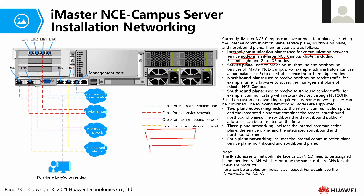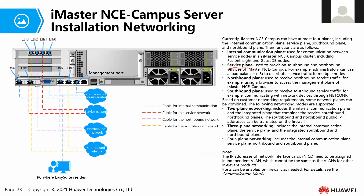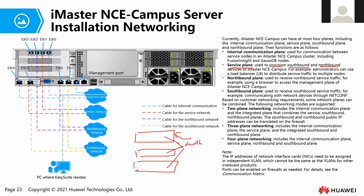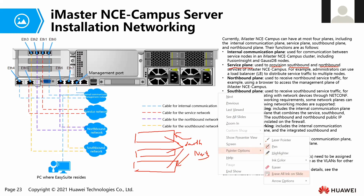For example, if we have three servers and these three servers need to communicate with each other — when they want to exchange data between the database and Fusion Insight — they will use the internal communication plane. The second plane is the service plane. The service plane is used to provision the southbound and northbound traffic. The southbound and northbound traffic coming into NCE Campus will be shared among the three servers, and the service plane will manage and load balance this traffic between all the servers.